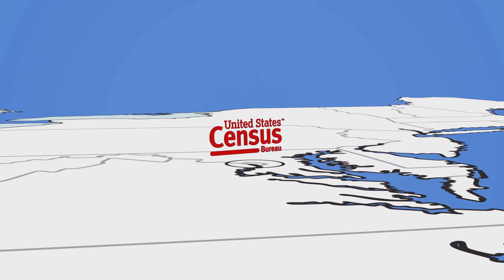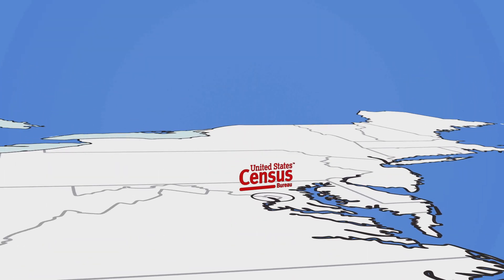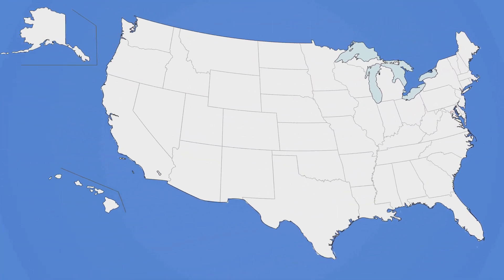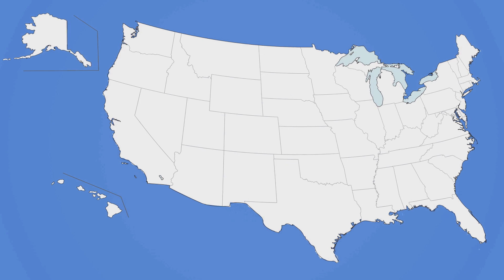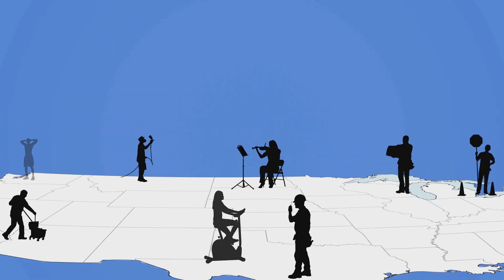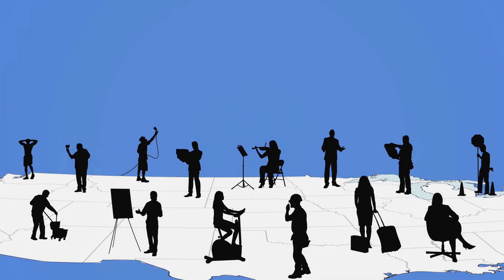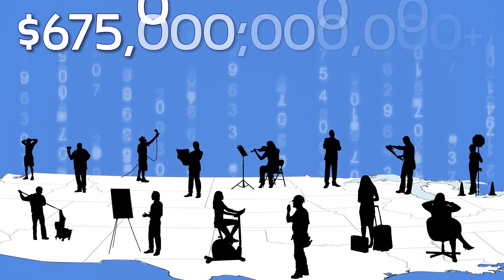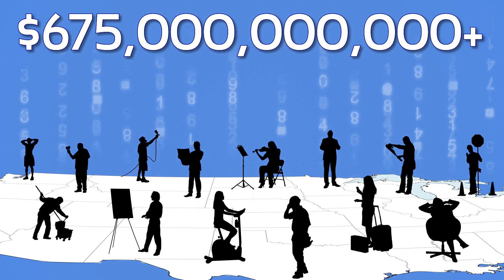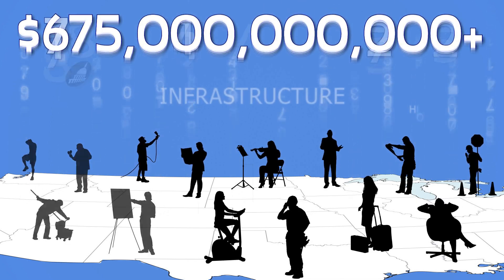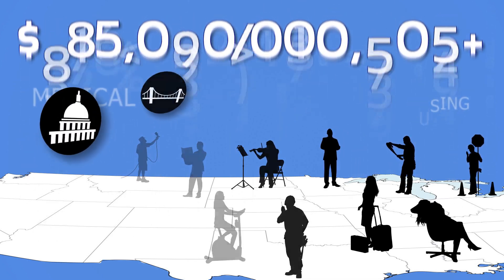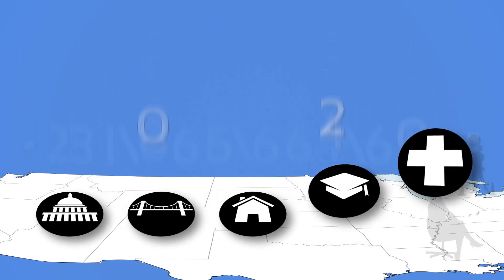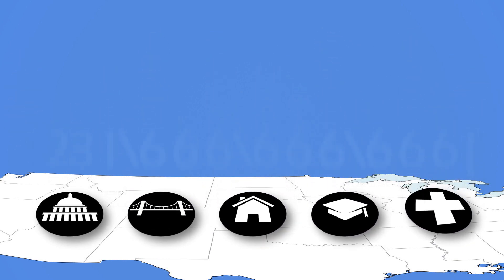The United States Census Bureau counts how many people there are and where they live. This demographic information helps the federal government allocate more than $675 billion annually in funding for infrastructure, programs, and services to communities nationwide.